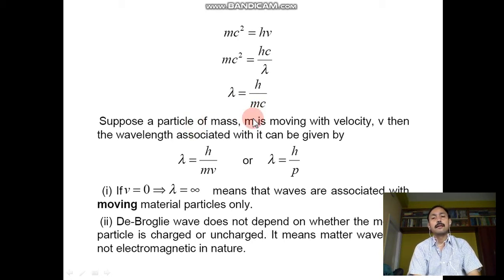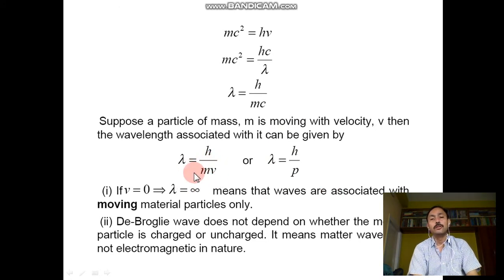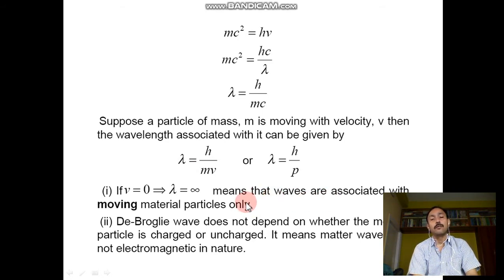Suppose a particle of mass m is moving with velocity v. Then the wavelength associated with it is λ = h/mv, or λ = h/p. Now, if v tends to 0, λ tends to infinity — meaning the waves are associated with moving particles only. V = 0 means λ = infinity, which means de Broglie waves are associated with moving material particles only.